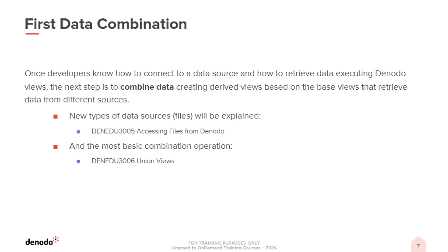The union is the most basic operation, where the data will come directly from both sources. The modules included in this section are: Accessing files from Denodo, where we'll explain how to access source files as local files or through the network — HTTP, FTP, etc. — and how to deal with authentication. And Union views, where we'll explore the union operation that combines data from data sources in the Denodo platform.